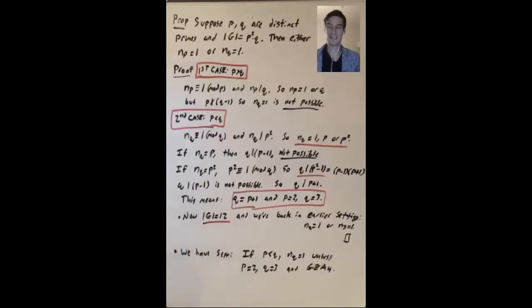In this video, we'll see additional examples of using the Sylow theorems to prove that groups of certain order have to have certain kinds of normal subgroups.